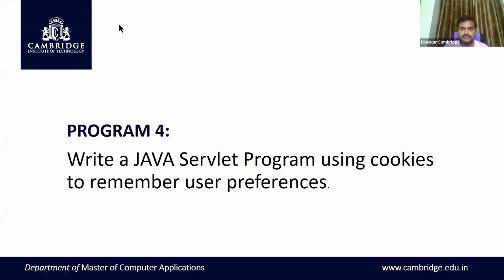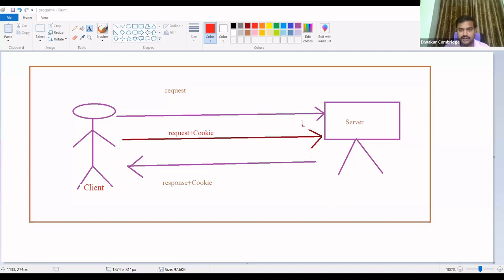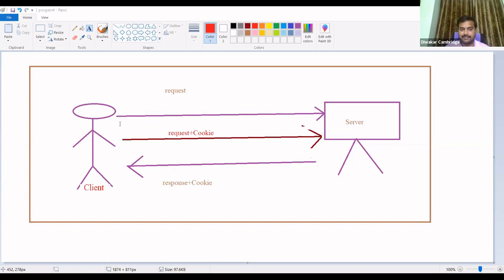Look at this diagram. Here we have a client and a server. The client communicates with the server by sending a request, the server processes that request and sends back a response. During this communication no information is being stored, so if multiple requests are sent by the client, the server will treat the client as a new client each time.